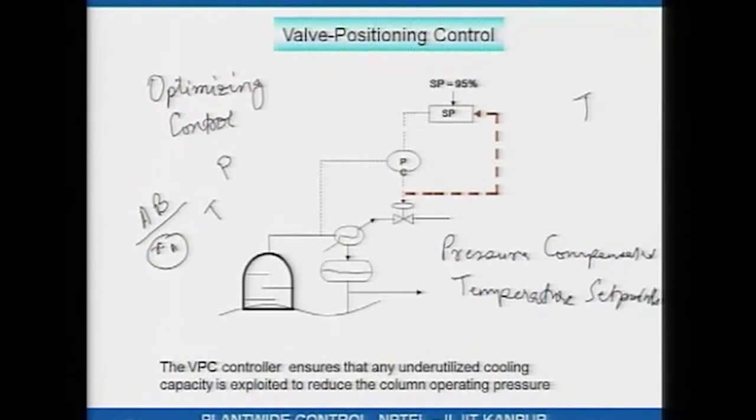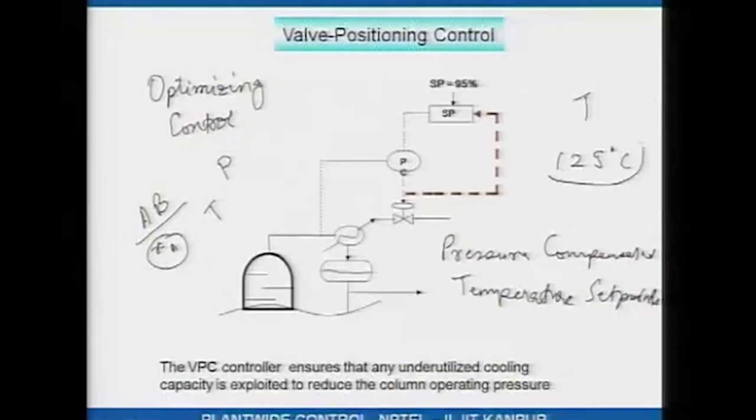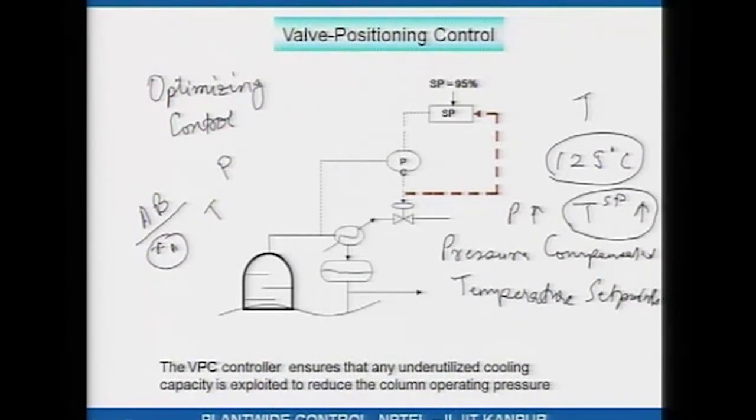To clarify further: if the column is operating at 1 atmosphere and the temperature set point that gives the right separation is 125 degrees Celsius, and the operating pressure of the column goes up because of the action of the valve positioning controller, then for the same separation at the higher pressure the liquid will boil at a higher temperature. So if pressure goes up, the temperature set point should also go up. By how much depends on the mixture being separated. Please be aware that to realize energy savings while implementing temperature control, the temperature set point must be adjusted depending on the current pressure of the column.